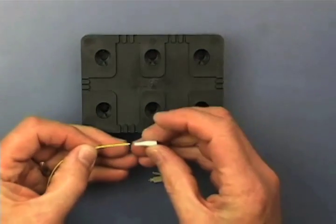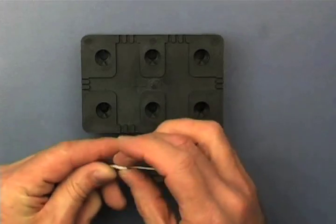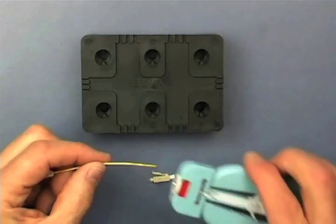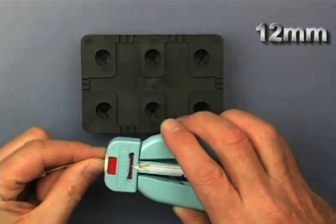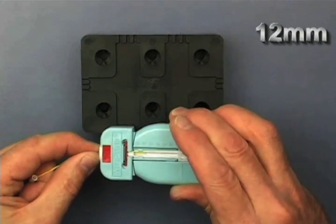Begin by sliding the buffer support over the fiber. Using the stripping tool, strip one half inch or twelve millimeters of buffer and coating from the end of the fiber.